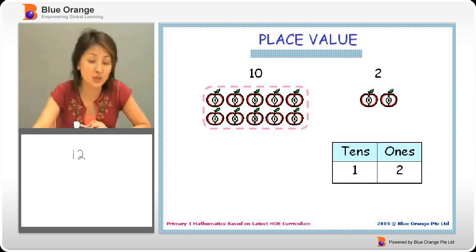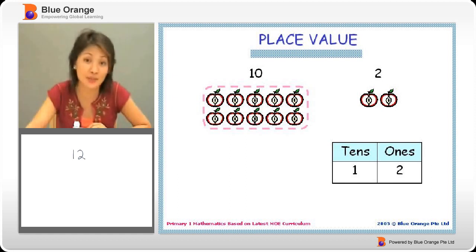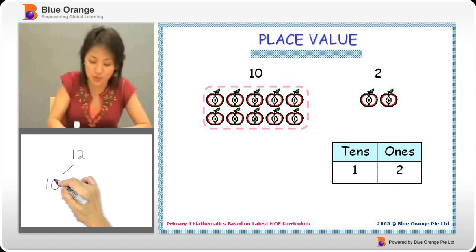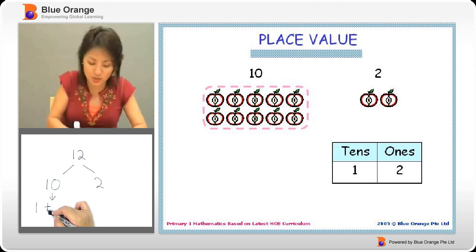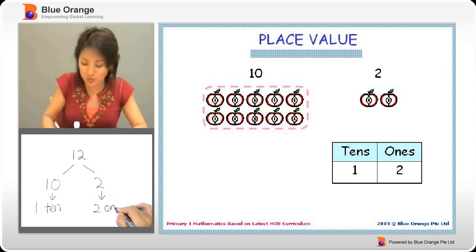Now when we talk about place value, we are talking about how many tens and how many ones. We've split it up into a group of 10 and a group of 2. So we can say that this is actually 1 group of tens.